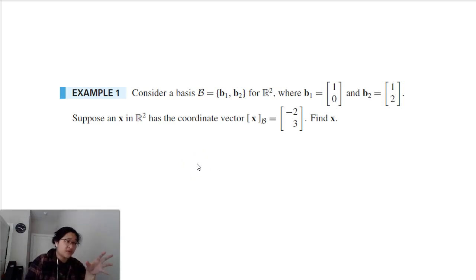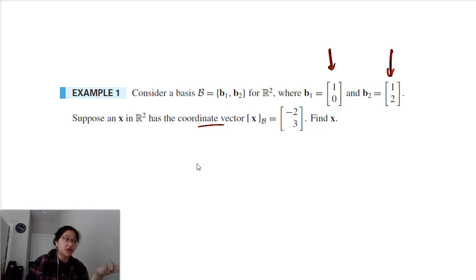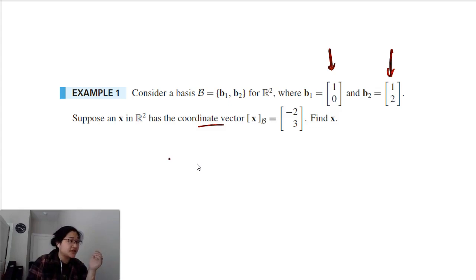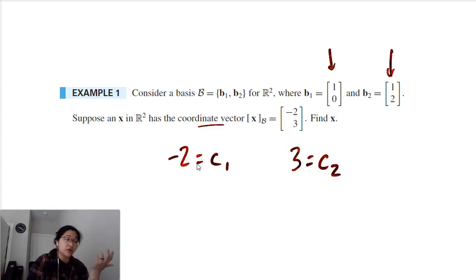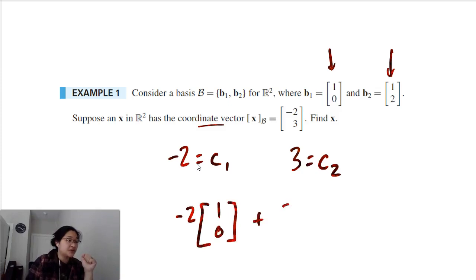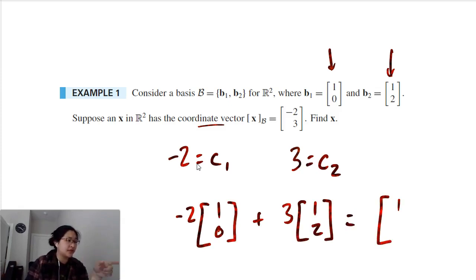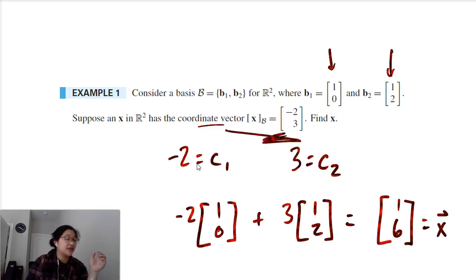Consider this basis where we have [1, 0] and [1, 2] — a non-standard basis. Suppose we have the coordinate vector [-2, 3] with respect to our basis b1 and b2, and we need to find the actual x. We have c1 = -2 and c2 = 3, so we weight b1 and b2: negative two times [1, 0] plus three times [1, 2]. We end up with [-2+3, 6] = [1, 6]. So x = [1, 6] given this coordinate vector and basis.